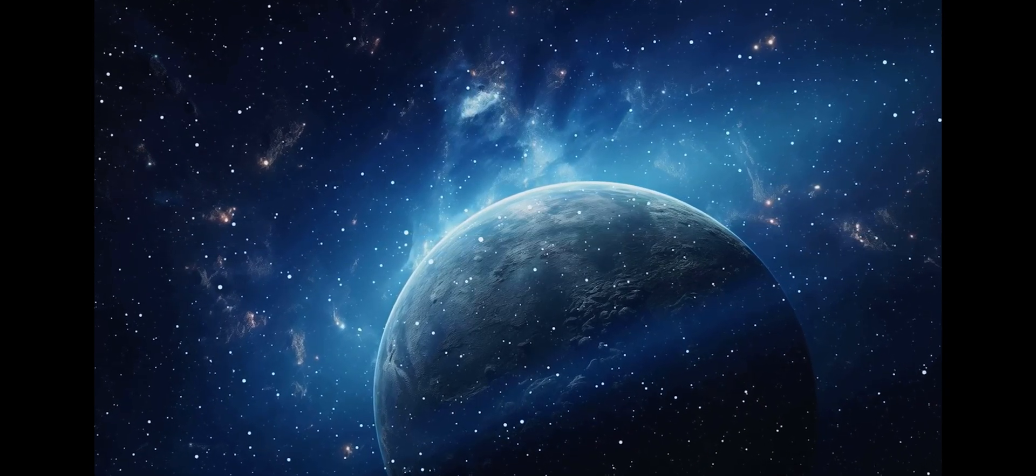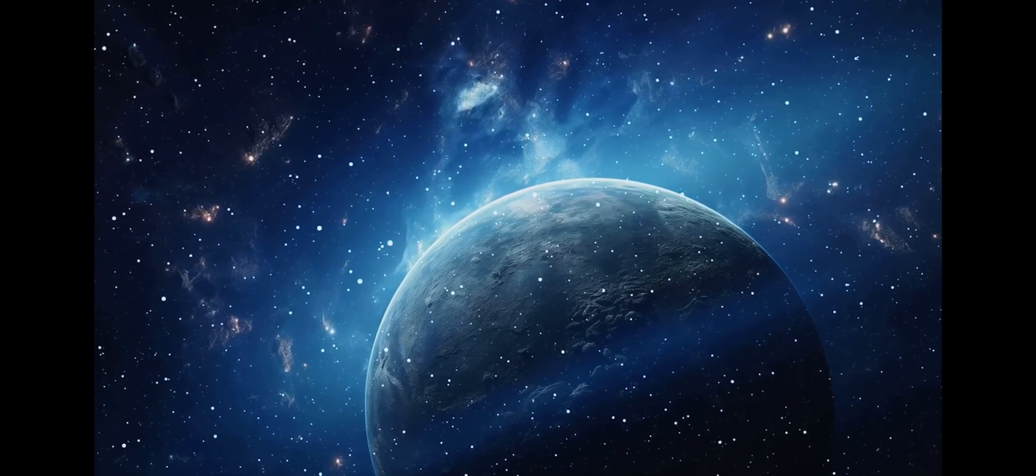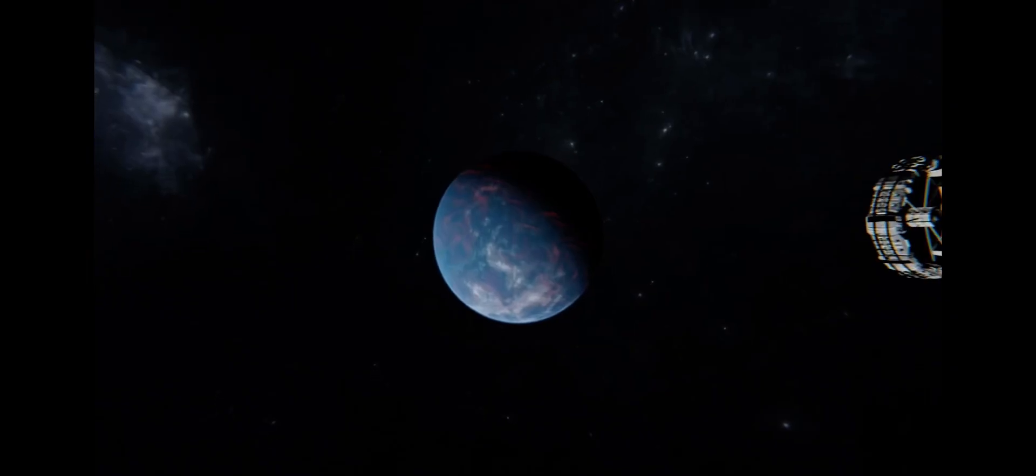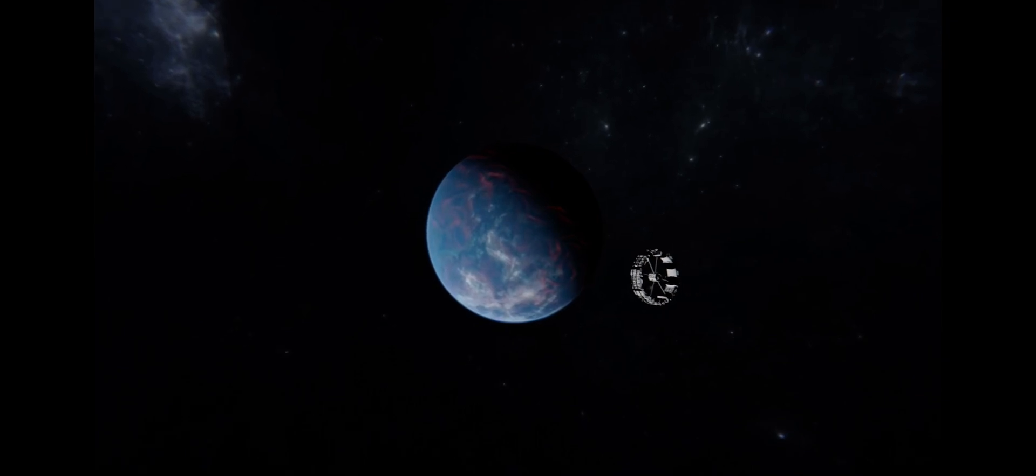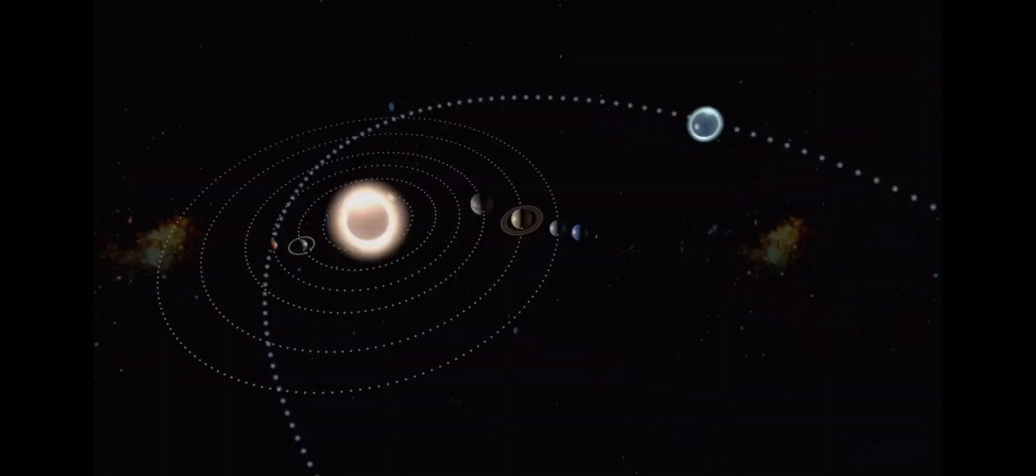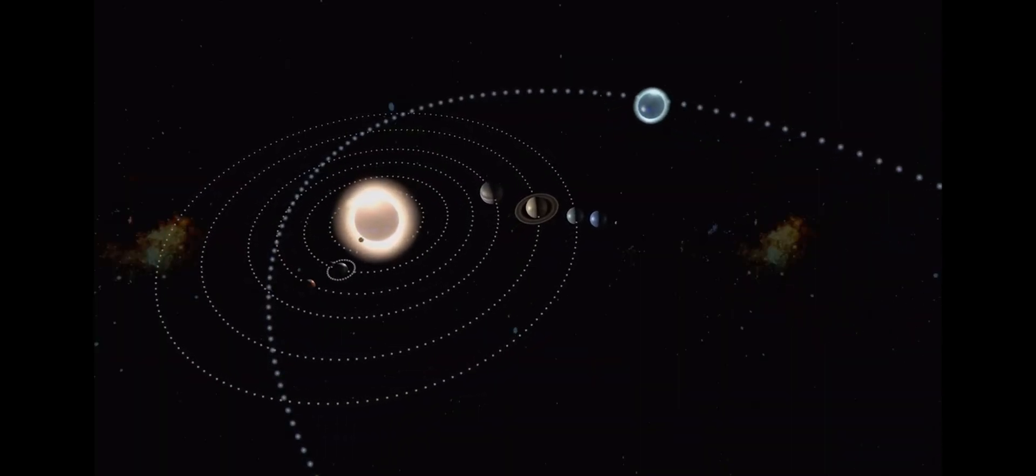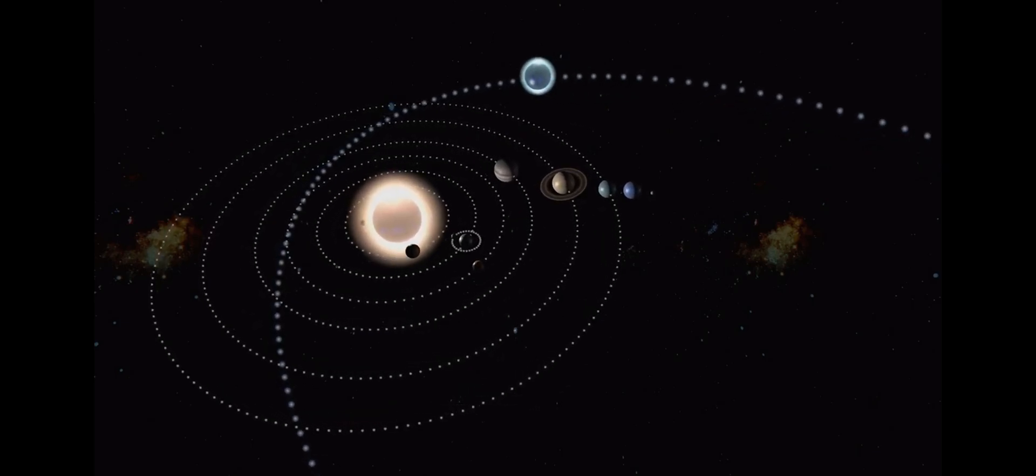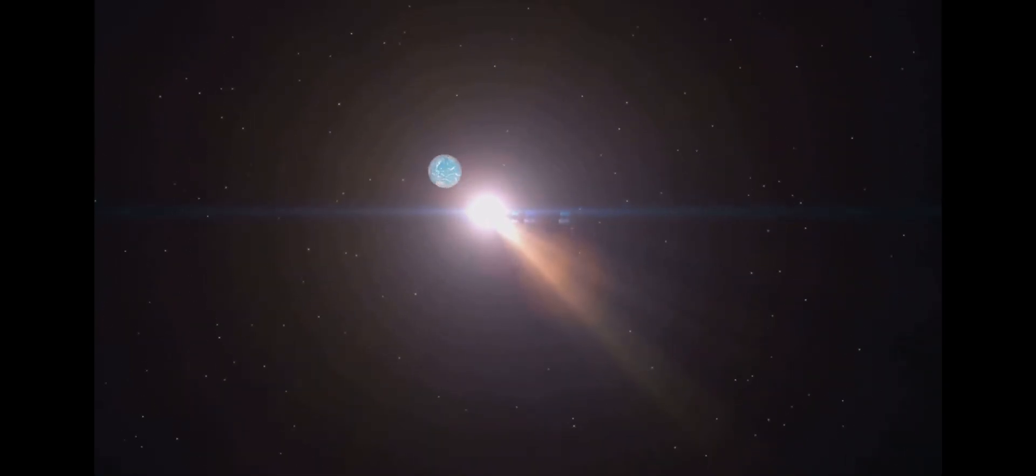Kepler-452b orbits a G-type star, the same type as our Sun, but slightly older and larger. It completes one orbit around its star in about 385 days, which is remarkably close to Earth's 365-day year. This similarity in orbital period is one of the reasons Kepler-452b is so intriguing. It suggests that the planet might experience seasons like those on Earth, although the exact nature of its climate remains a mystery.